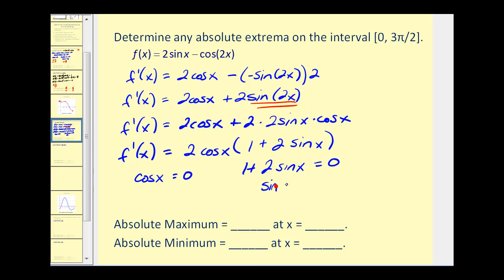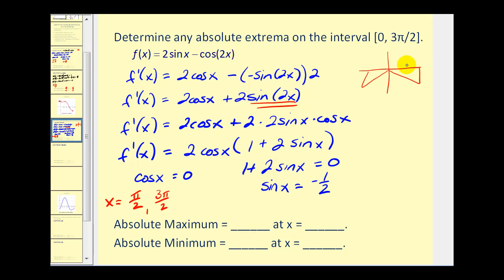Solving for sine x in the second equation: sine x equals negative one-half. For cosine x equals zero on the given interval, we get x equals pi over two and x equals three pi over two. For sine x equals negative one-half, we need a 30-degree reference angle in the third and fourth quadrants. That gives us seven pi over six and eleven pi over six radians, but eleven pi over six is outside the closed interval. So we evaluate the function at four values: f of zero, f of pi over two, f of seven pi over six, and f of three pi over two.